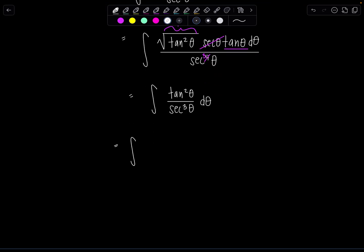So tan squared theta in the numerator that's sine squared theta over cosine squared theta and then if we have secant cubed theta in the denominator well that's cosine cubed theta really over one d theta.